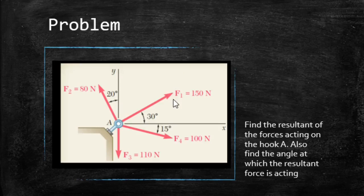You can see that F1 is 150 newtons acting at an angle of 30 degrees, F2 is 80 newtons acting at an angle of 20 degrees, F3 is 110 newtons acting vertically down, and F4 is 100 newtons acting at an angle of 15 degrees. So here you can say that this is not a consistent method of defining the angle.